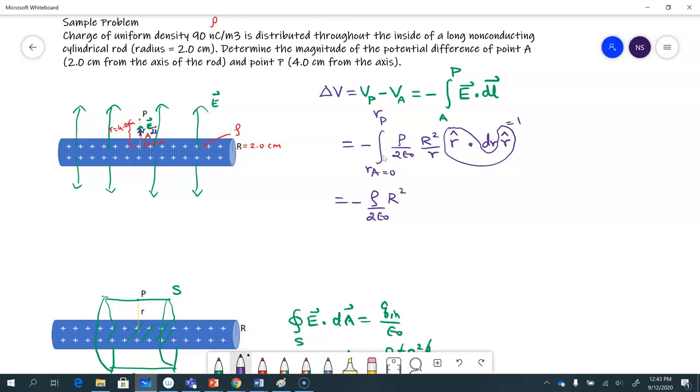So integral dr over r will just give me natural log of r. And that's to be evaluated between 0.02 to 0.04. The rest is just math substituting everything.